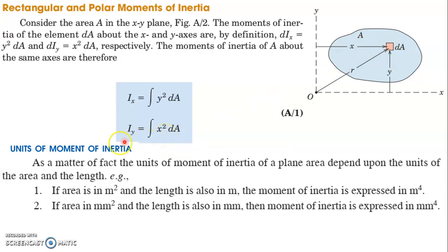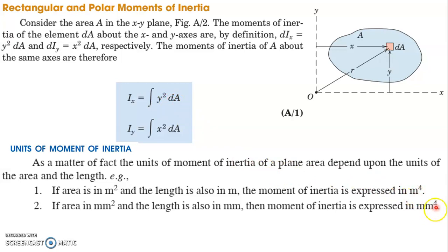Next, let's look at the units of moment of inertia. The unit of area is mm² or m². Distance is in mm or m, so distance squared is mm². Therefore, distance squared times area equals mm² × mm² = mm⁴, or m⁴. So the unit of area moment of inertia is mm⁴ or m⁴.